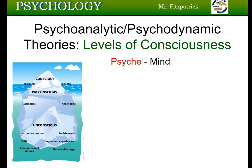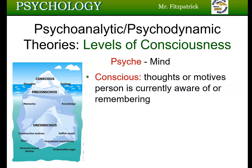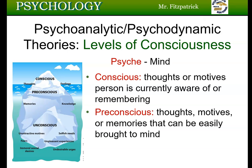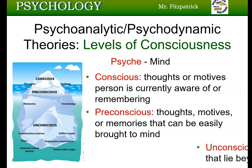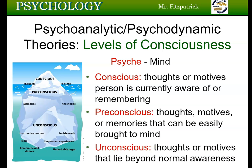Freud had three levels of consciousness. He called the mind the psyche. He said we have the conscious part — those thoughts or motives a person is aware of or remembering — the pre-conscious, which are thoughts, motives, or memories that can easily be brought to mind, and then the unconscious, which are those things that lie below our normal awareness. We use the iceberg as a representation of the psyche or the mind.